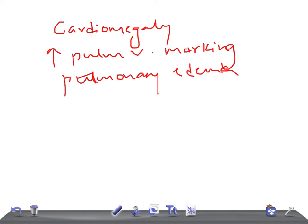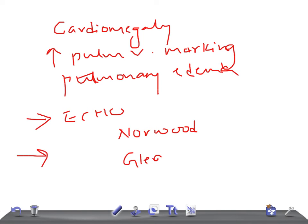The diagnostic test of choice is ECHO. Now the treatment part: usually there is no simple intervention because this has really very high mortality. There is a three-stage surgery: the Norwood procedure, Glenn procedure, and Fontan procedure. Briefly, in the Norwood procedure, the pulmonary trunk is used to reconstruct the hypoplastic aorta, and the right ventricle subsequently becomes the functional left ventricle - we make the right ventricle function similar to the left ventricle, because the left ventricle in HLHS is really very small and almost non-functional.